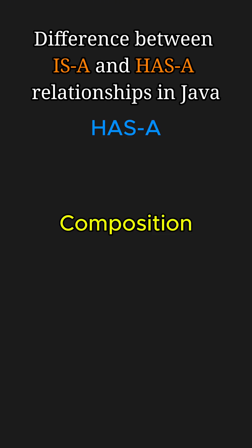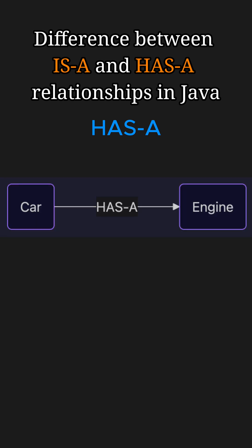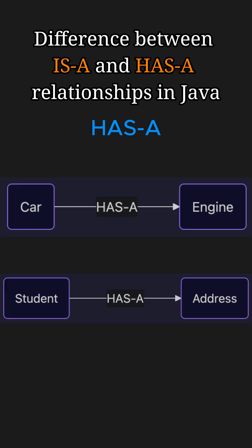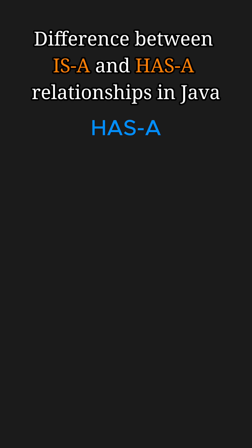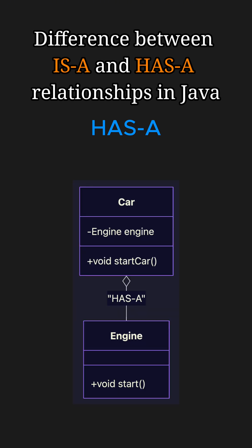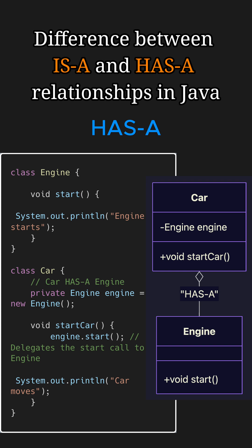Now let's see the has-a relationship. It means one class contains or owns an instance of another class. For example, a car has an engine, a student has an address. This is implemented using object references within a class. Here, a Car class has an Engine class because Car contains an instance of the Engine class.